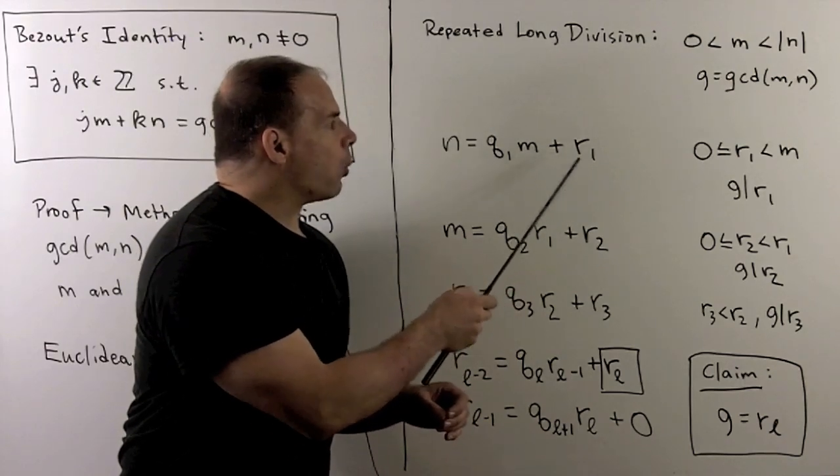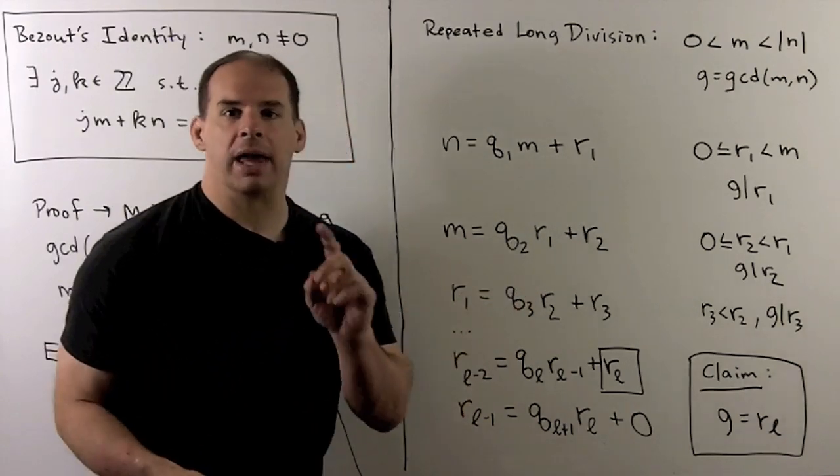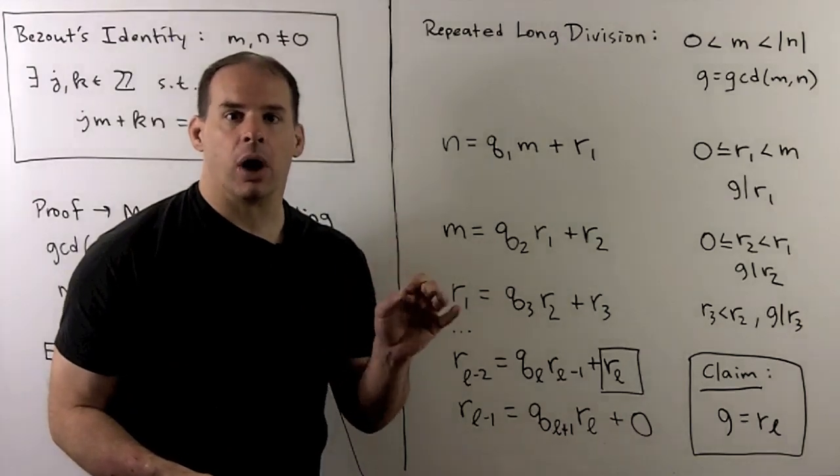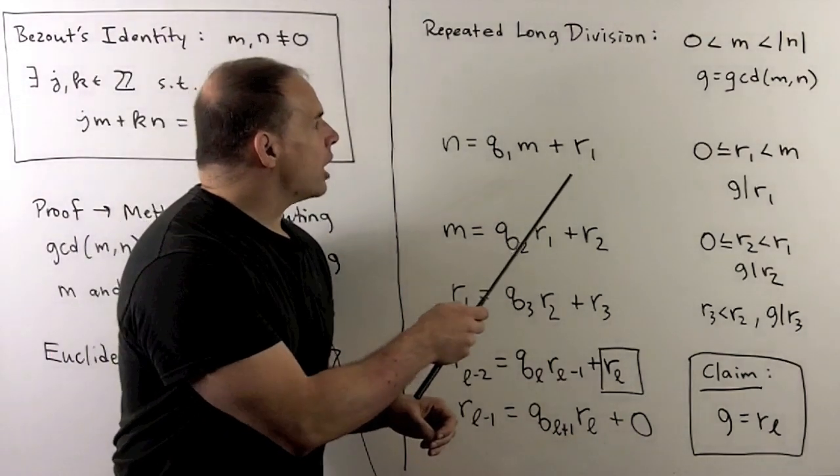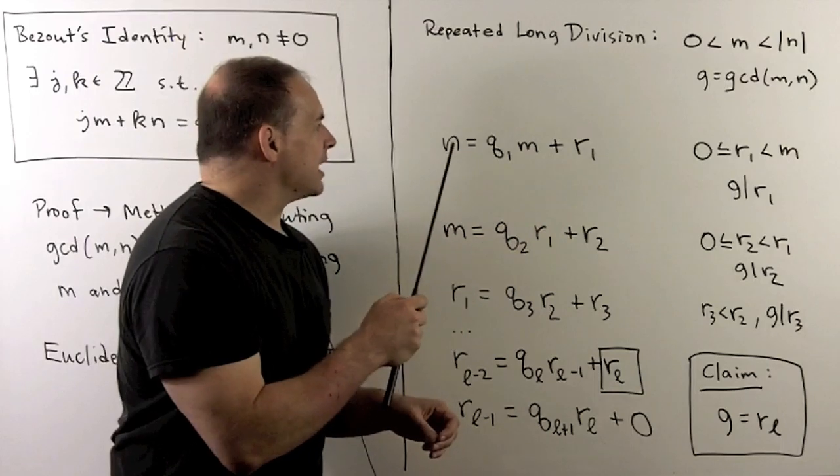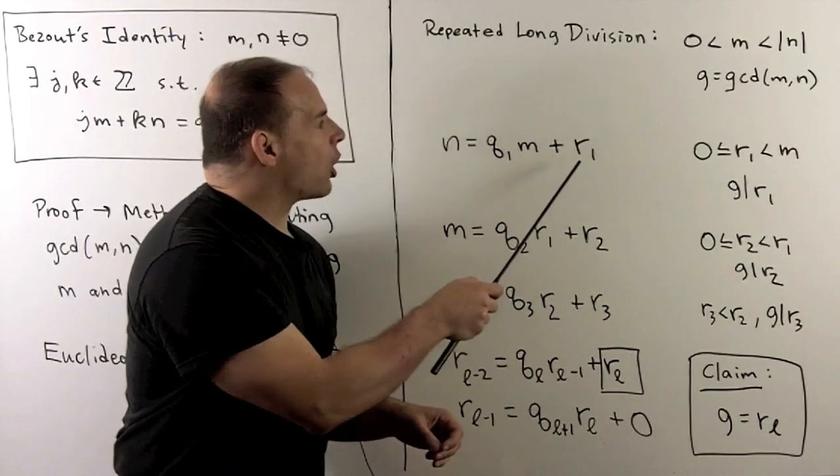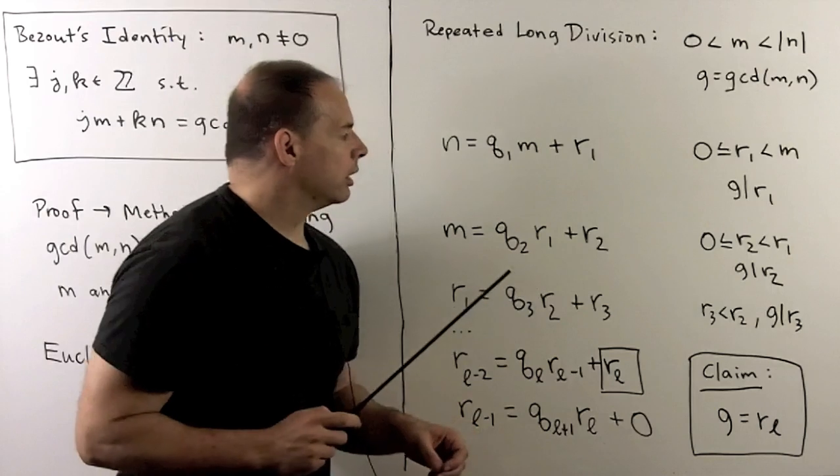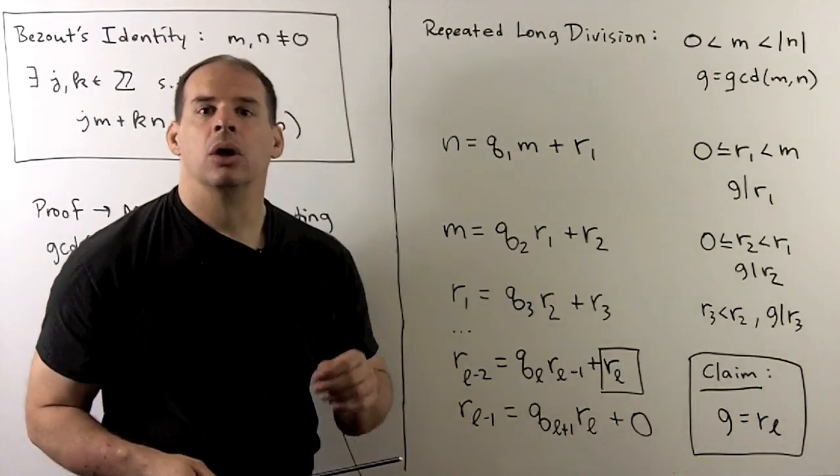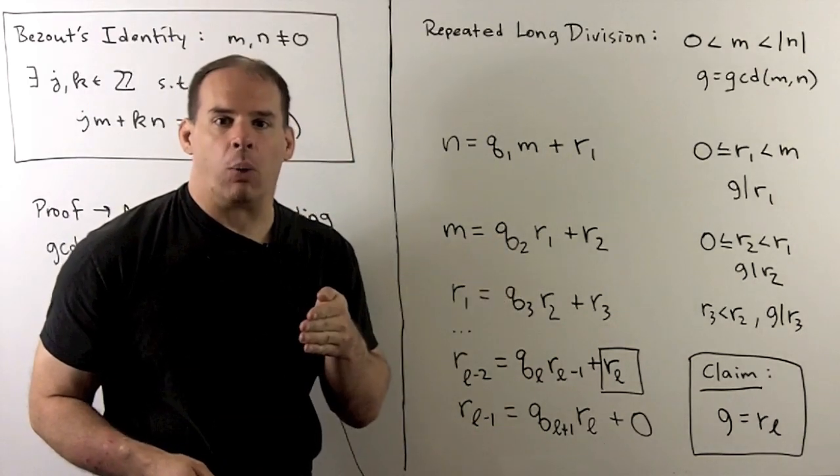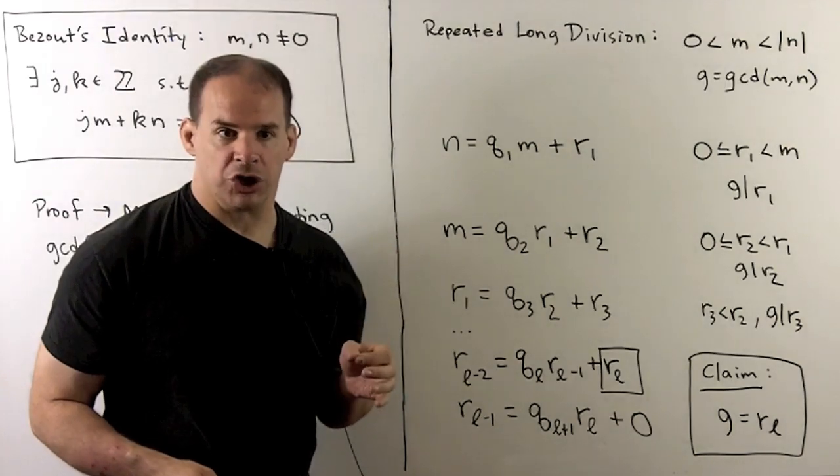So, we'll have n is equal to q1 times m plus remainder r1. So, that means r1 is going to be between 0 and m, including the 0. Because greatest common divisor divides n and m, it must divide r1. So, if g divides r1, we shift everything to the left by 1, do another long division.